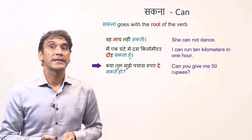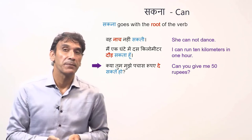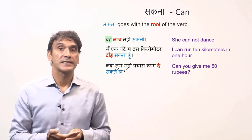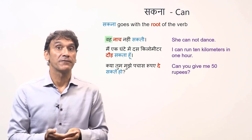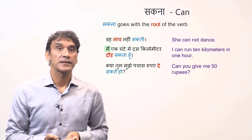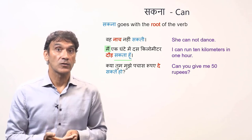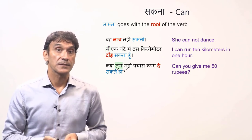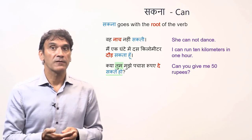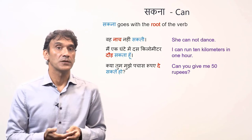Keep in mind that the verb sakna comes at the end of the sentence and it changes in number and gender based on the subject. In the first example, woh is third person singular feminine — sakti. In the second example, the subject is main, which is masculine — sakta hoon. In the third example, the subject is masculine tum — sakte ho. The model verb sakna comes at the end and the other verb comes just before it.